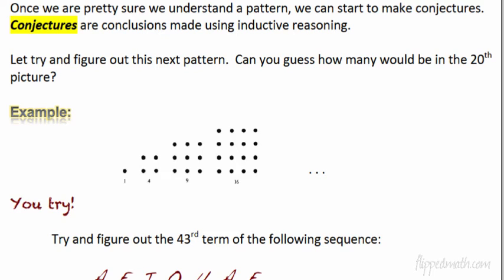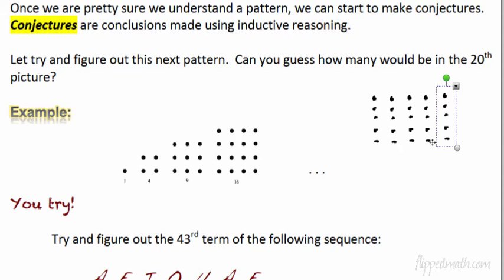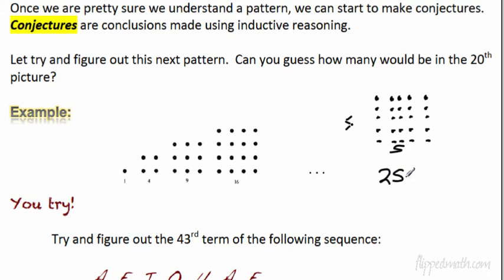Once you figure out a pattern, you can start making conjectures. A conjecture is a conclusion made using inductive reasoning. For example, there's a square of size 1, size 2 (2×2=4), size 3, size 4. The next would be size 5, with 5×5=25. But can you guess how many would be in the 20th? If you continue the pattern to the 20th, you'd have 20×20 = 400. That answers the question using inductive reasoning.